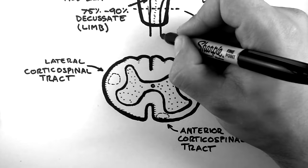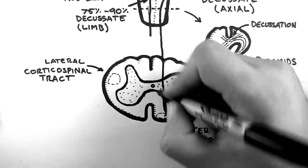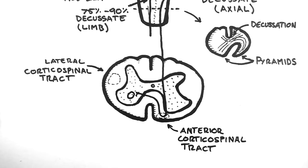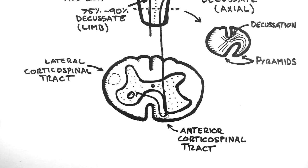When they get to their target level, the fibres of the anterior corticospinal tract finally decussate through the anterior white commissure, before synapsing to a neuron in the anterior horn of the grey matter.